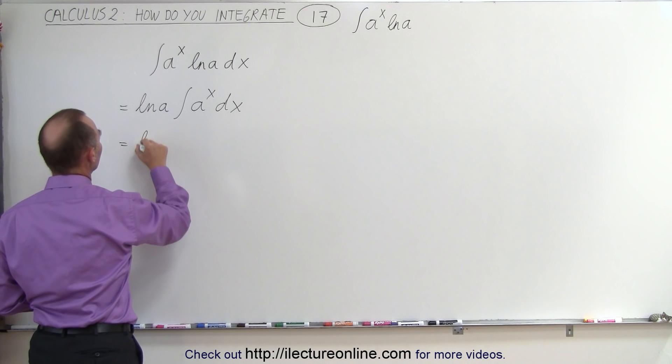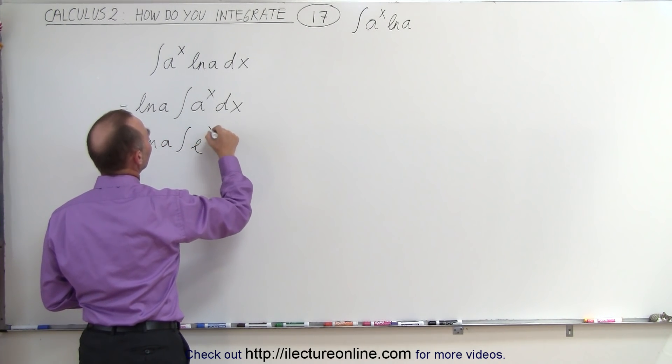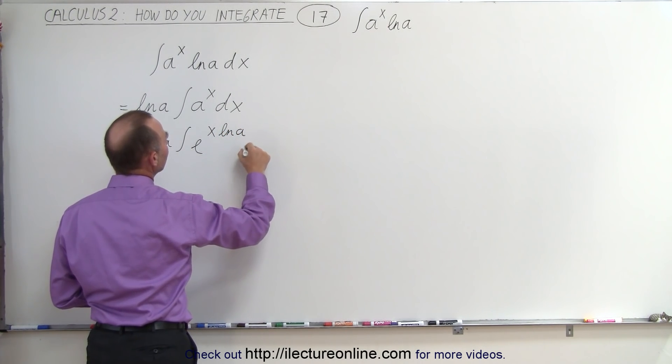This becomes equal to the natural log of a times the integral of e to the x times the natural log of a dx.